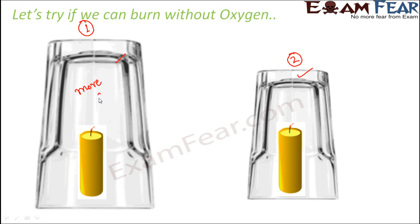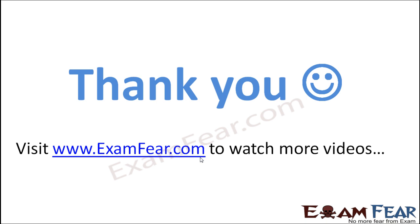In the bigger glass there is more air, so more space means more oxygen — the candle gets a supply for a longer time and glows longer. In the smaller glass there is less air, therefore less oxygen, so the candle goes off quickly. This clearly proves that we cannot burn an object without oxygen — air is very much necessary for the burning process to take place.